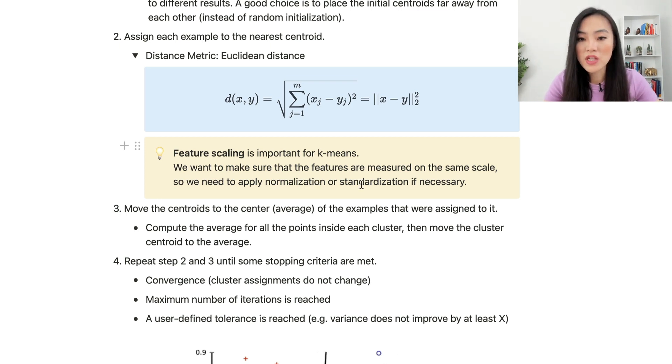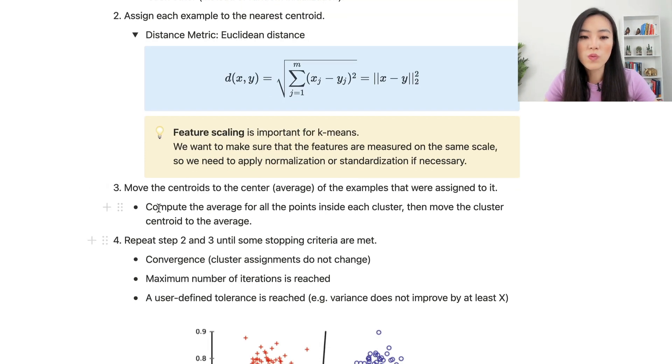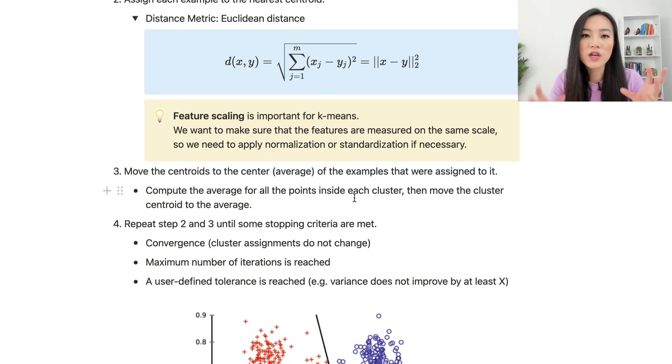Next, we move the centroid to the center of the examples that were assigned to it. Basically, we compute the average for all the points inside each cluster, then we move the cluster centroid to the average.